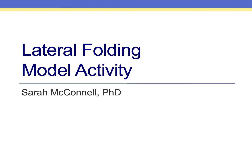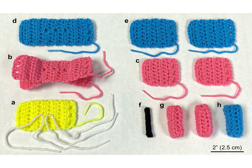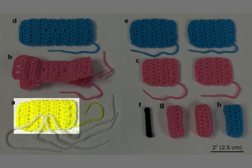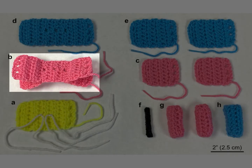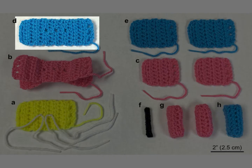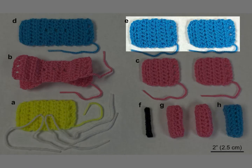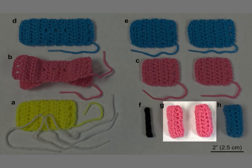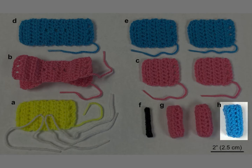This video demonstrates a modeling activity with crocheted pieces to illustrate the process of lateral folding of the embryonic disc. The pieces include one yellow endoderm piece, one pink mesoderm piece with lateral split edges and two shorter pink mesoderm lateral extension pieces, one blue long ectoderm piece and two shorter blue ectoderm lateral extension pieces, one black notochord piece, two pink paraxial mesoderm column pieces, and one blue neural tube piece.